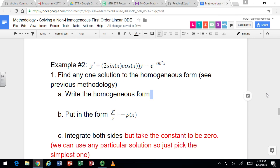Okay, so we are going to solve a non-homogeneous first-order linear ordinary differential equation. The one we're looking at is y prime plus 2 sine of x cosine of x y equals e to the negative sine squared of x. What we're going to do is solve the homogeneous form first, and that will end up being part of our solution to the original problem.